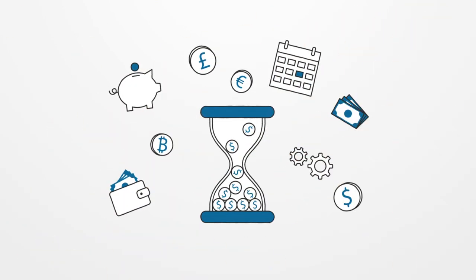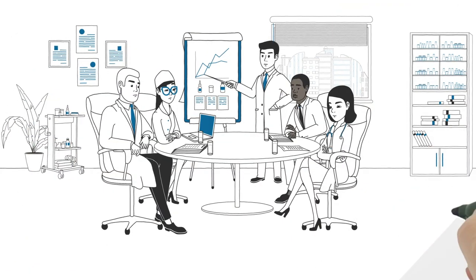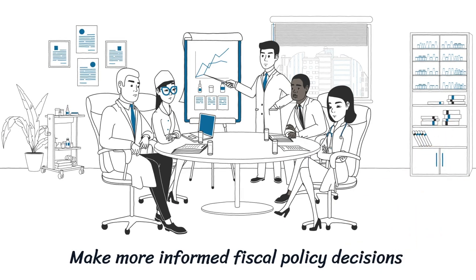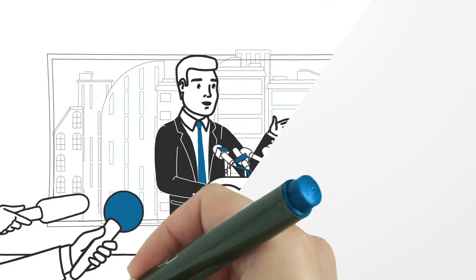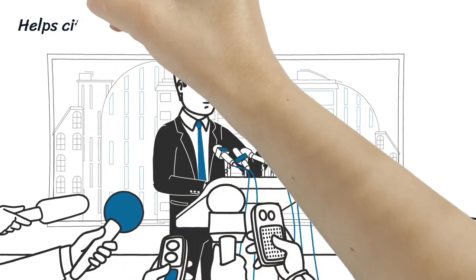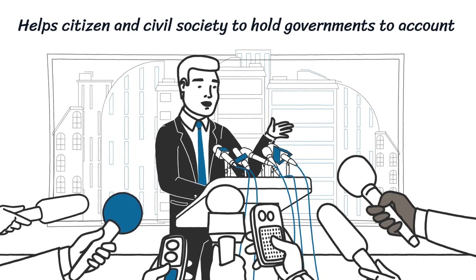Tax, transfers and spending on social sectors are some of the most powerful instruments in the hands of government to tackle poverty and inequality. Monitoring pro-poor public social spending and the redistributive impact of fiscal policy will support governments and civil servants by giving them the chance to make more informed fiscal policy decisions. It also helps citizens and civil society to hold governments to account to ensure that financing decisions are fit to reduce poverty and inequality.